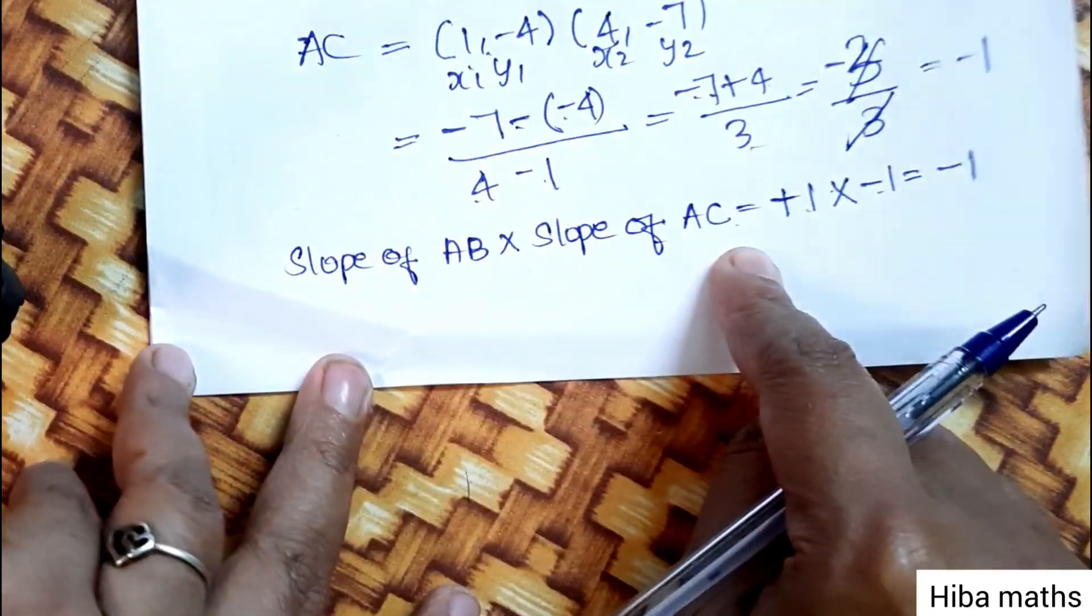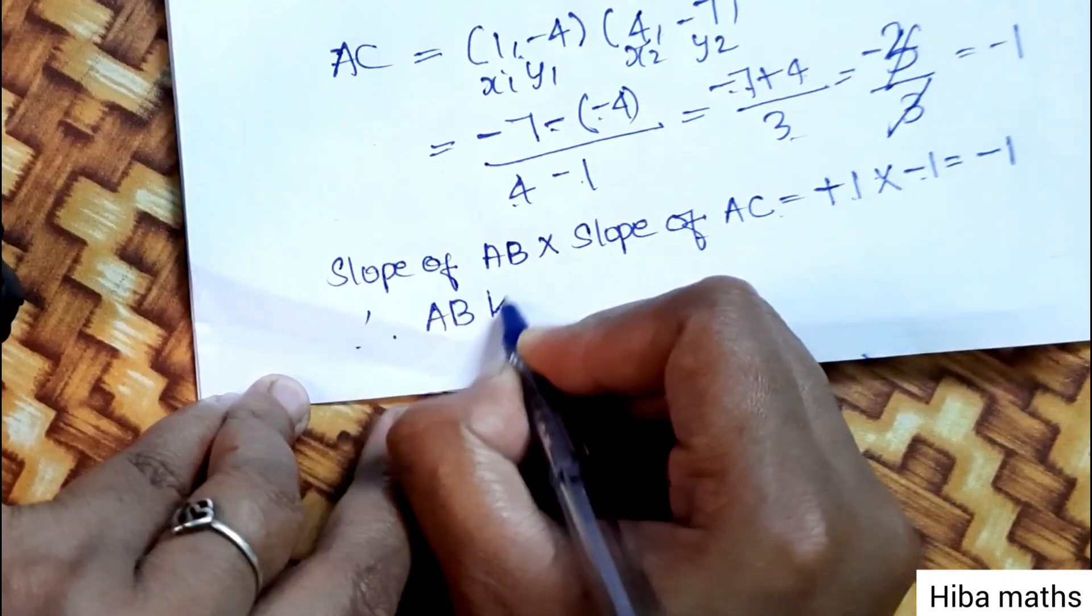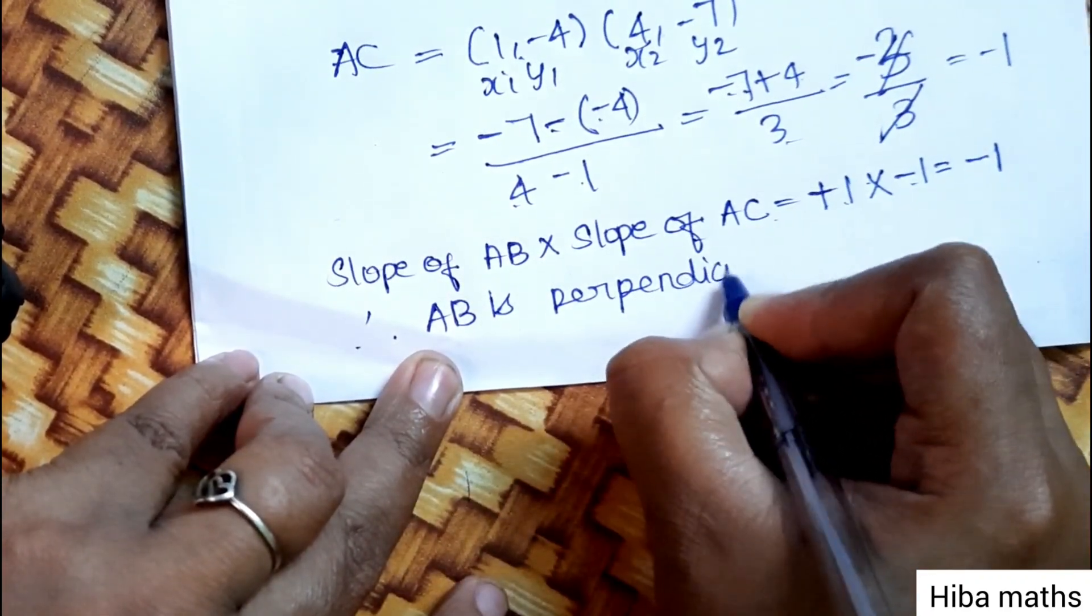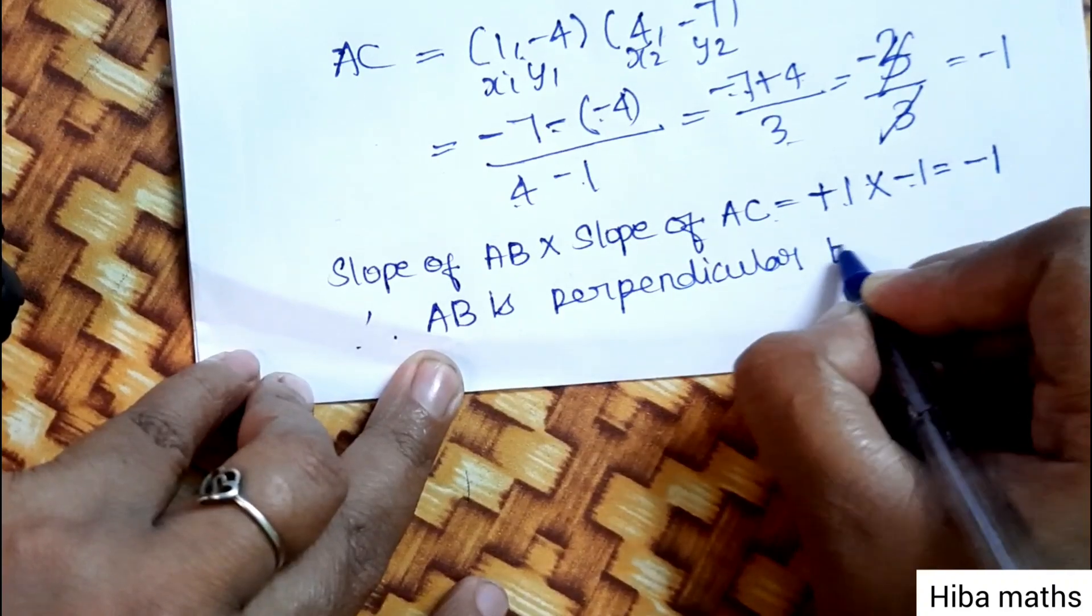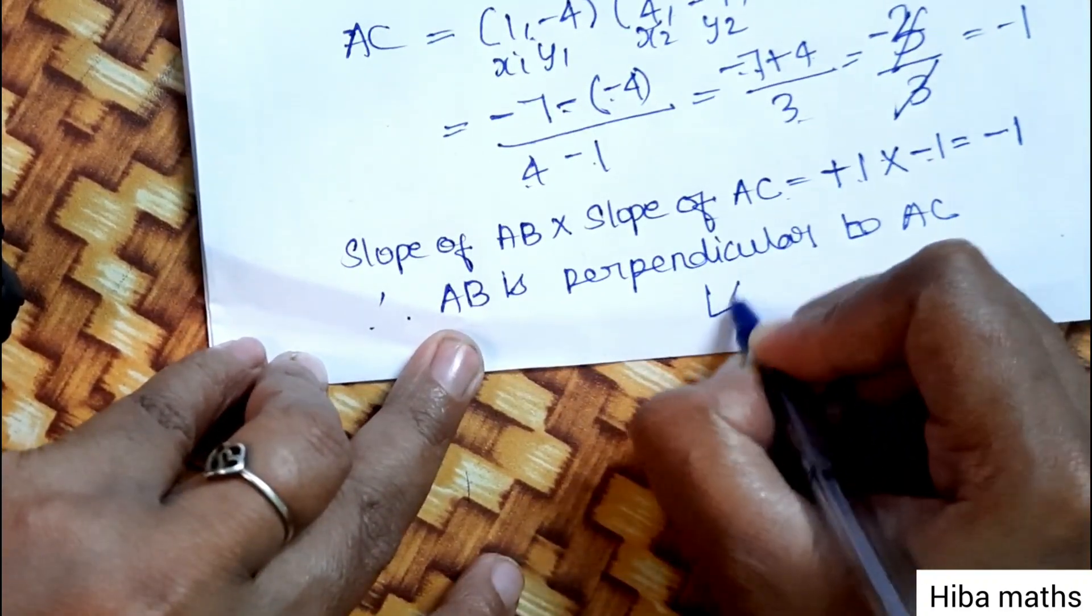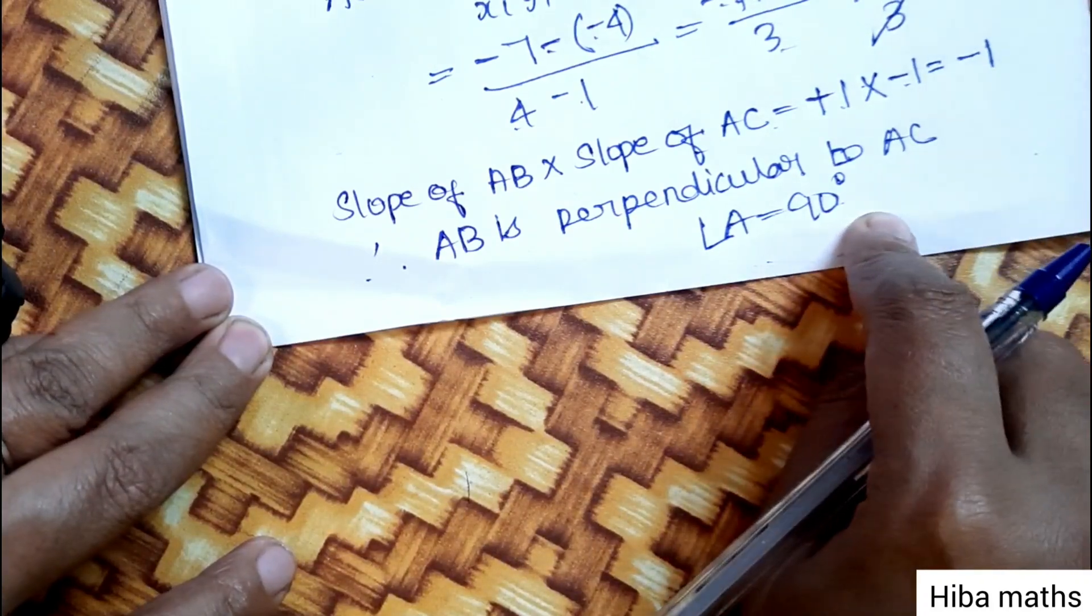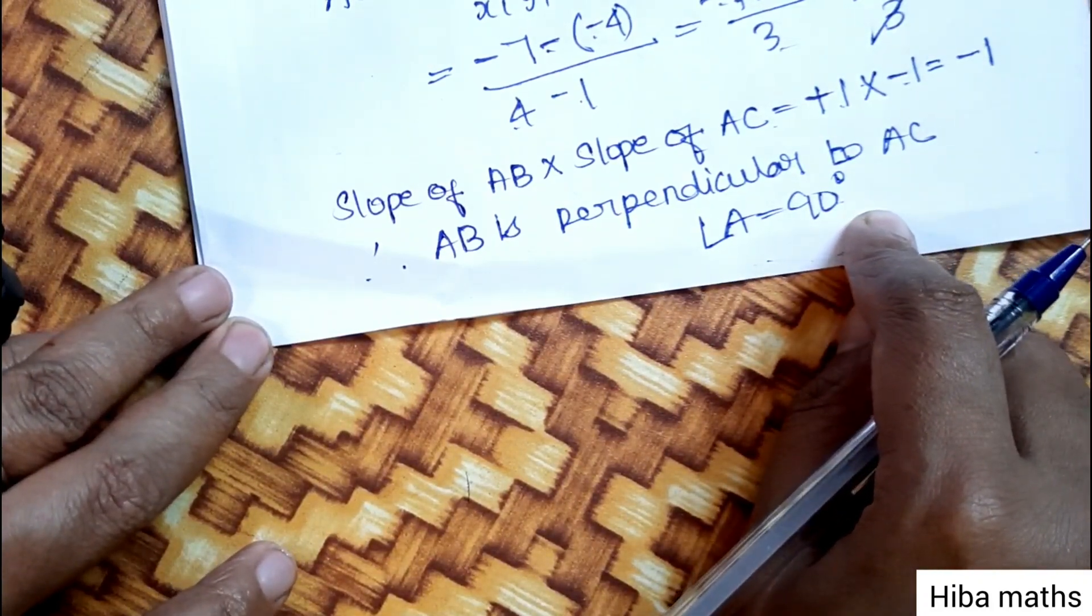So AB is perpendicular to AC. AB is perpendicular to AC and angle A is 90 degrees, so this is a right angled triangle.